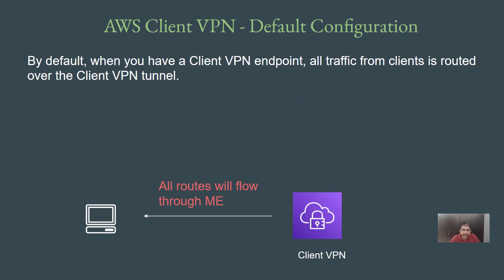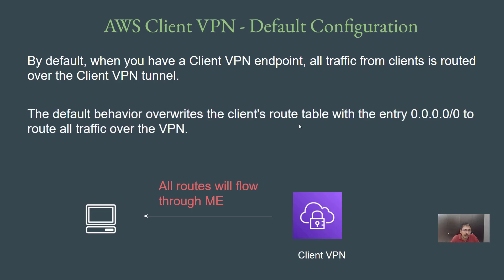When we discuss the AWS Client VPN, you'll see a similar configuration where by default all traffic from the client is routed over the client VPN tunnel. Whenever you connect to the client VPN, routes are pushed from the VPN to the client to redirect all traffic through it. This default behavior overrides the client's route table with an entry of 0.0.0.0/0 to route all traffic over the VPN. This default configuration is not suitable for many organizations, but you can modify it at the client VPN level.